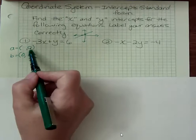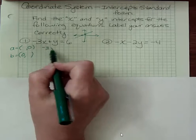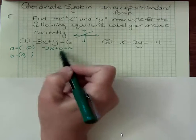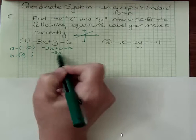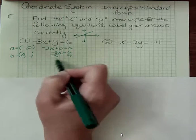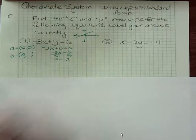Well what if y was zero? What would x be? So we just go in and we plug in the value we know and we solve for the other value. Dividing both sides by negative three, I get x is negative two. So that would be my x intercept.